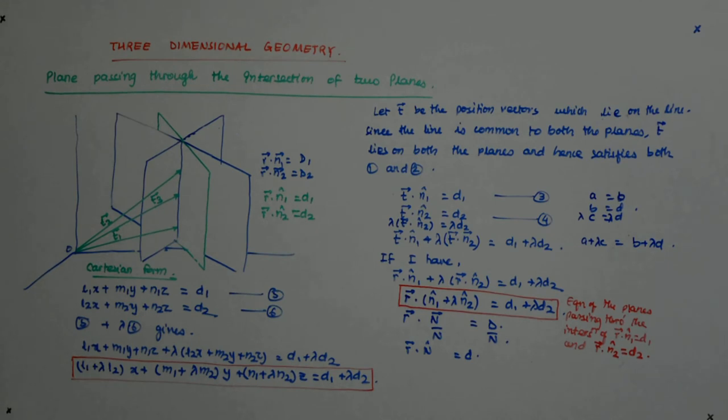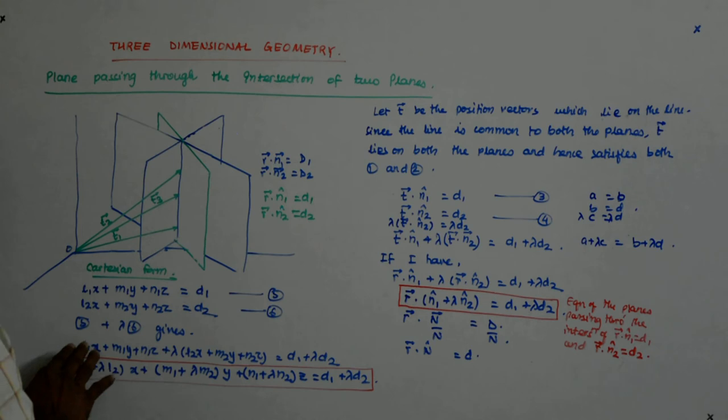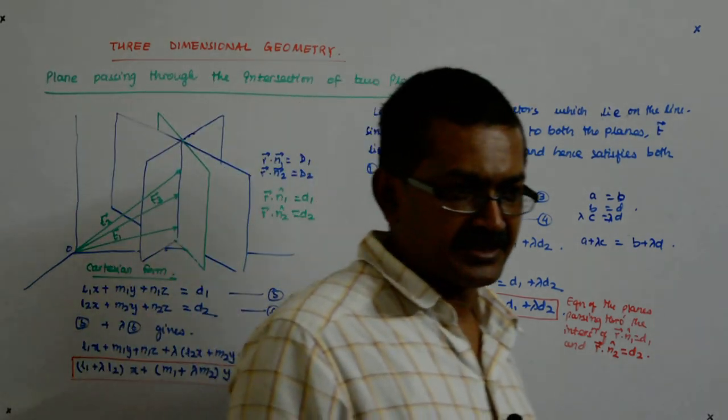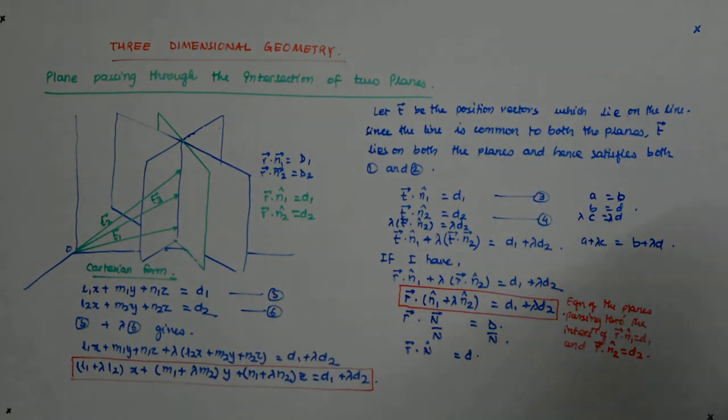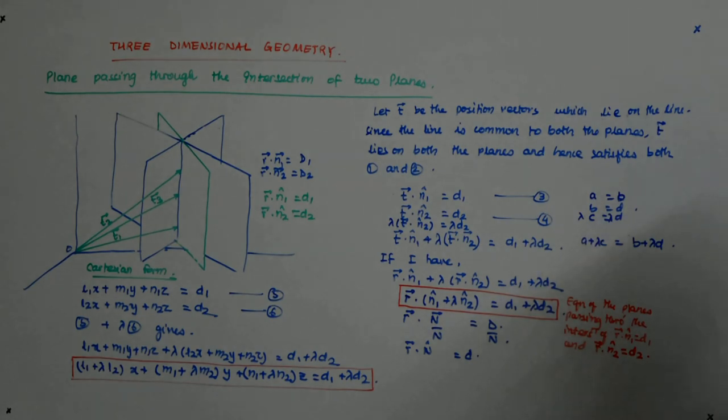Now, if that is the case, it is only that these L1s, M1s and N1s, that means direction cosines, get replaced by direction ratios. That is all.